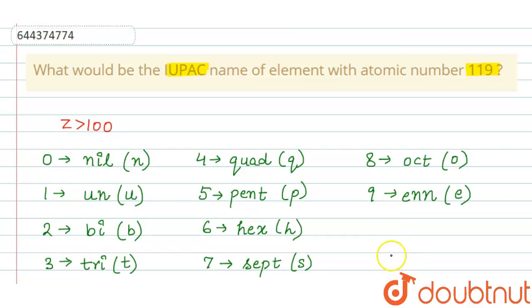So for writing the IUPAC name, first we write the notations for all the digits and at the end we add i-u-m.